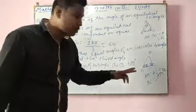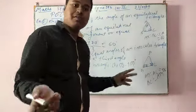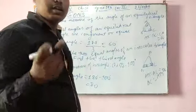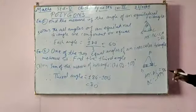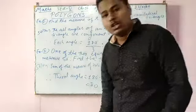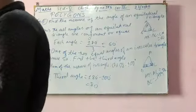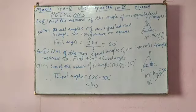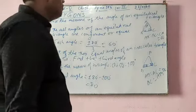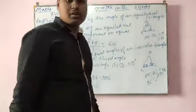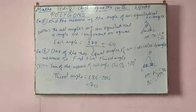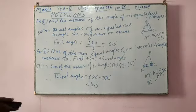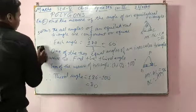The sum of the measure of angles in a triangle is 180 degrees. Always keep this in mind: the sum of the measure of a triangle is 180 degrees — whether it is equilateral, isosceles, scalene, or any triangle. Now we will come to example number four.